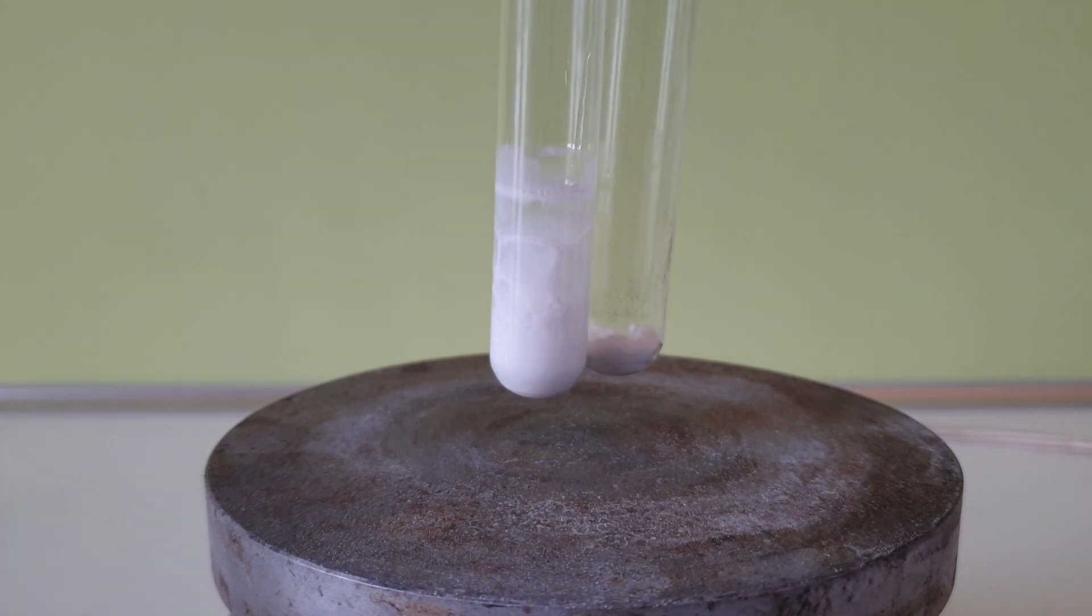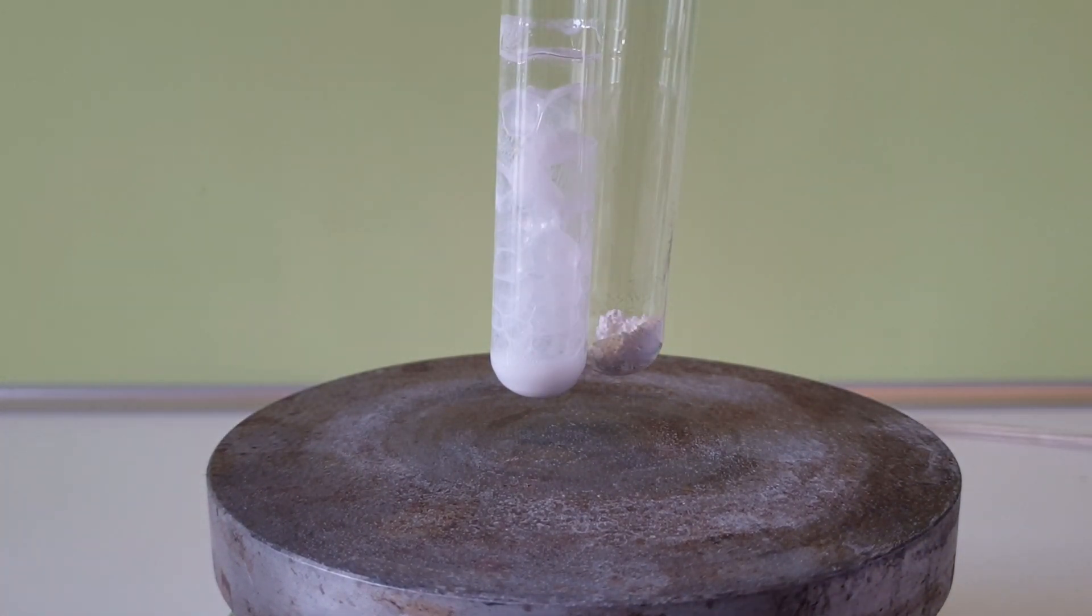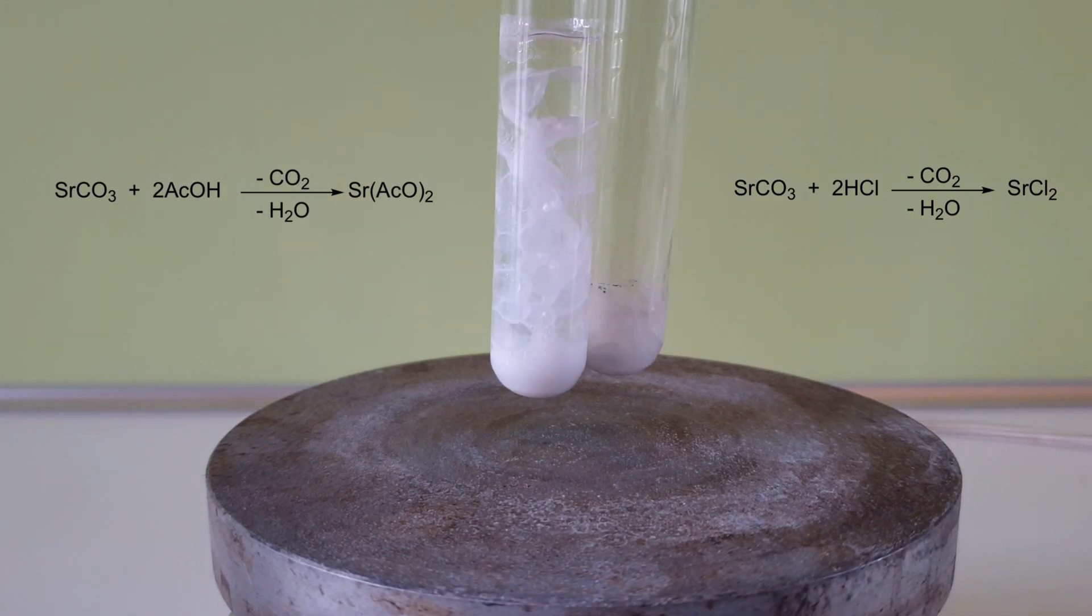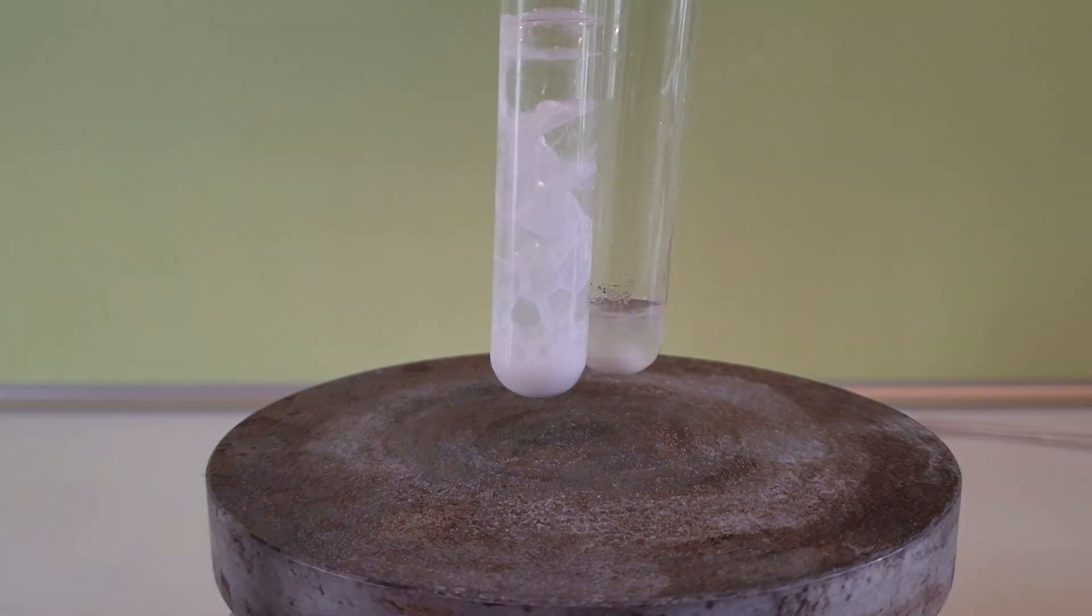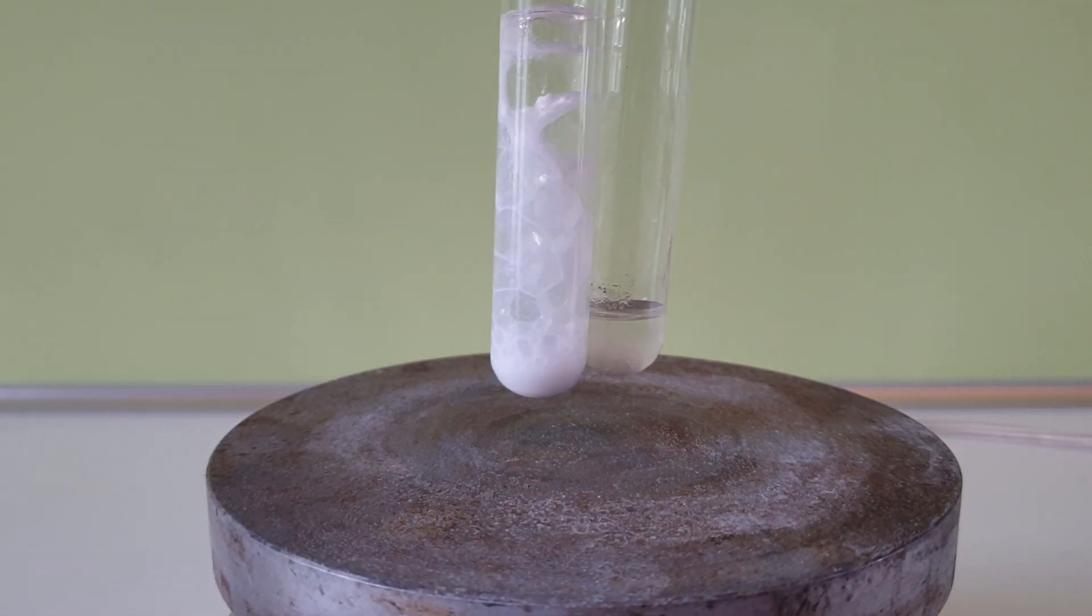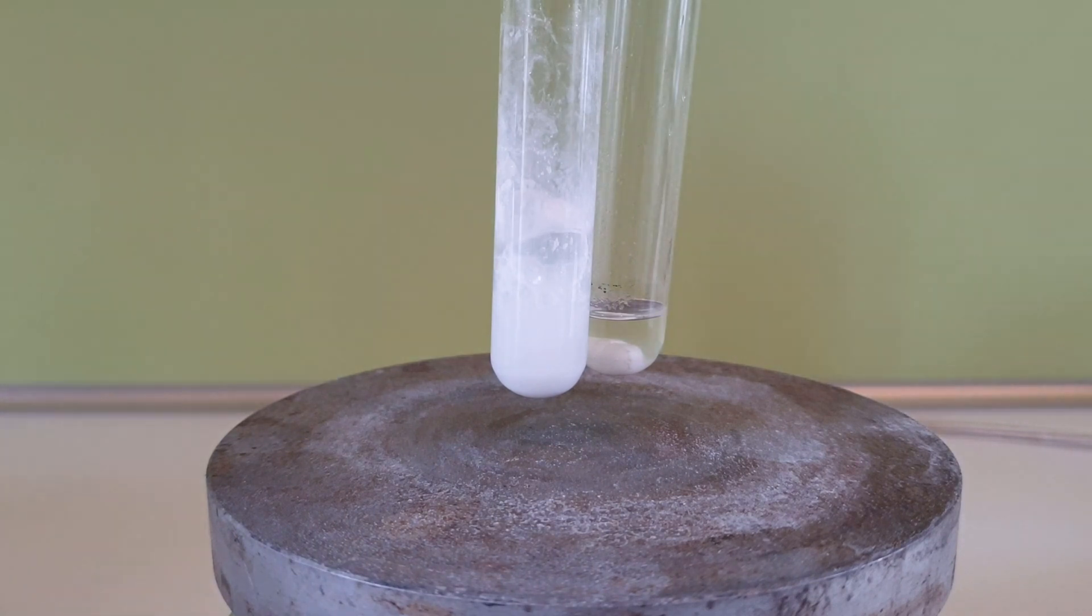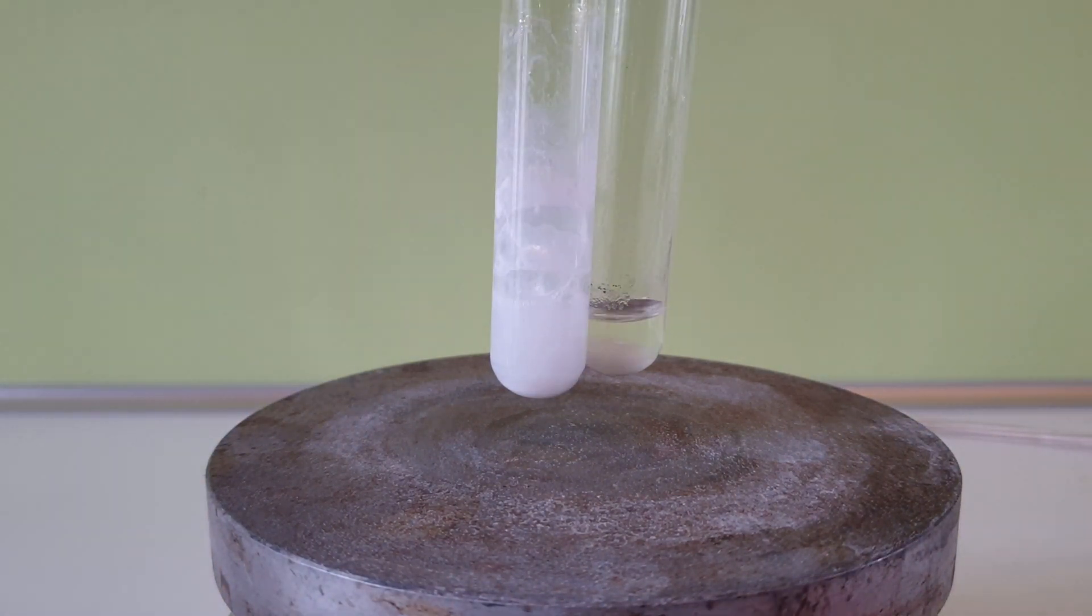Now I add two milliliters of the corresponding acid to the carbonate. You can see an immediate reaction between the carbonate and the acid forming the soluble salt. The acetic acid mixture decided to be a little bit annoying and pushed solid up with the CO2 bubbles, so I added a little bit of water to push everything back into the liquid.